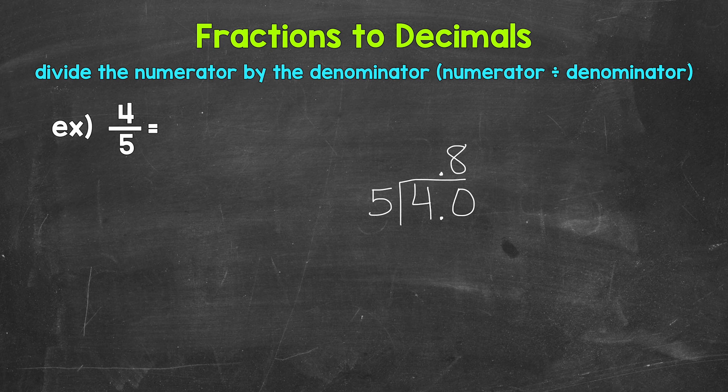Now we multiply. 8 times 5 is 40. Subtract. 40 minus 40 is zero, so we have that clean cut zero there at the bottom and nothing else to bring down within the problem. So we are done.